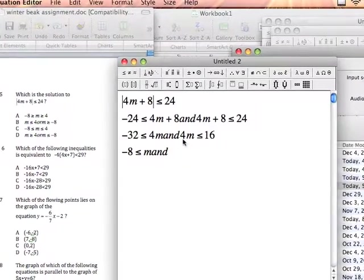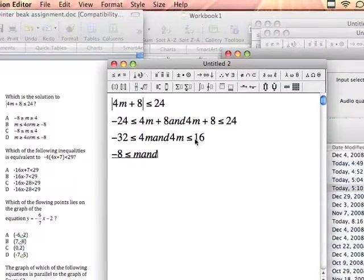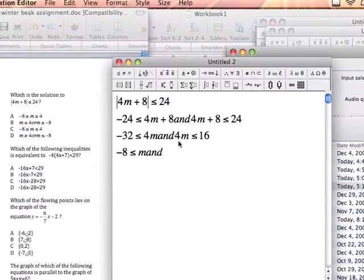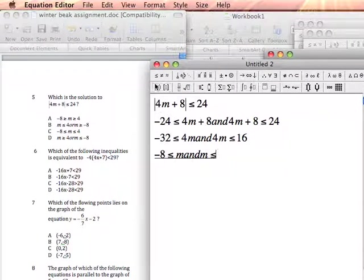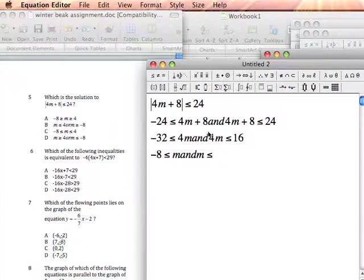Divide by 4 on both sides of my second inequality. 4 divided by 4 cancels, I'll be left with m, keep my less than or equal to symbol the same, and 16 divided by 4 is 4.